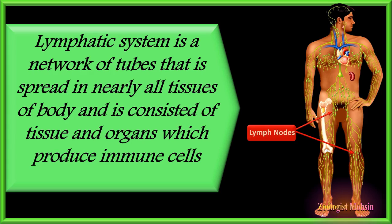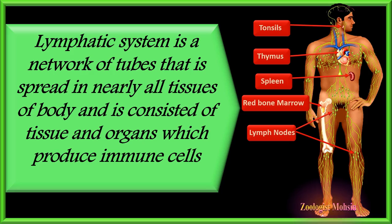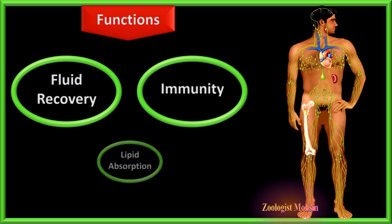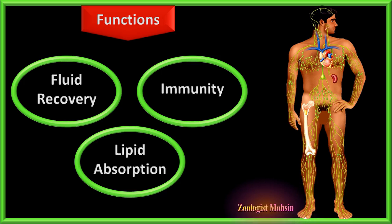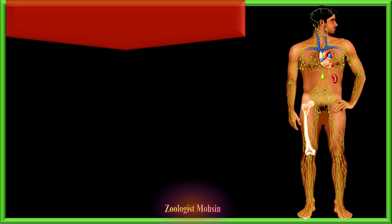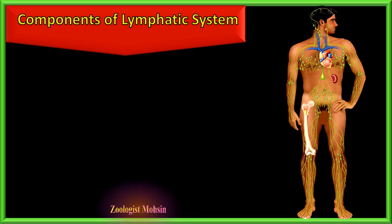The lymphatic system consists of tissues and organs which produce immune cells. Among these organs and tissues are lymph nodes, thymus, spleen, tonsils, and red bone marrow. The main functions of the lymphatic system are fluid recovery from the body, providing immunity, and lipid absorption from tissue fluid.